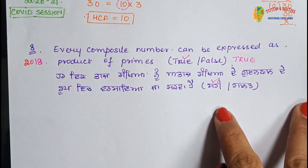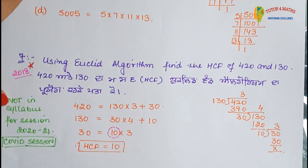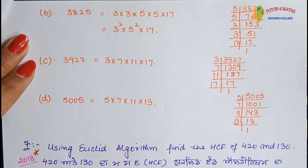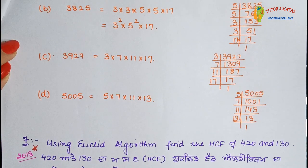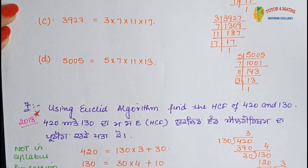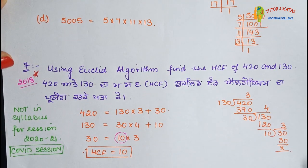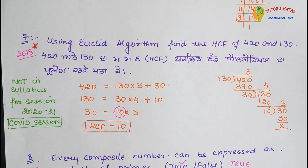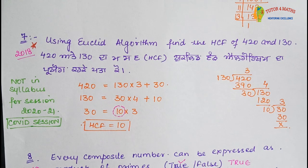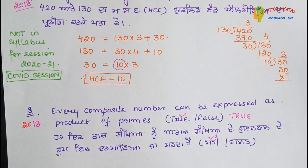We have four parts — part A is here, and parts B, C, D are on the next page. You can match your own answers as you go. Seventh question uses Euclid's algorithm — this is star-marked but I have included it for universal use so future students can also benefit. From 2008: a true/false question — 'Every composite number can be expressed as a product of primes' — the answer is True.